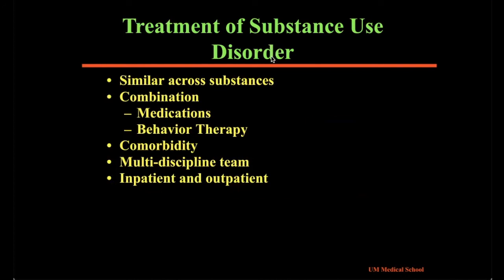For all other substance use disorders, approaches tend to be similar across different substances, typically including medication and behavior therapy used together. Treatment would start with detoxification, which tries to wean patients off the substance as quickly and safely as possible while dealing with withdrawal symptoms. This may require admission to a hospital or residential treatment center. Withdrawal severity and symptoms vary by category of substance, so detoxification approaches differ. A clinician may also temporarily substitute other substances, such as methadone, buprenorphine, or a combination of buprenorphine and naloxone for opioid addiction.